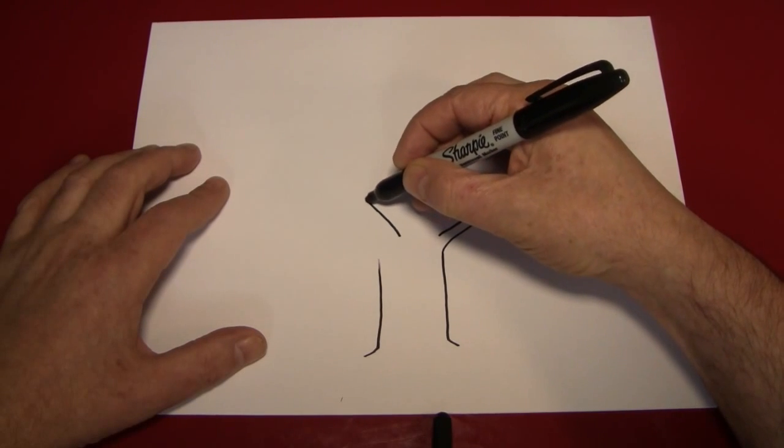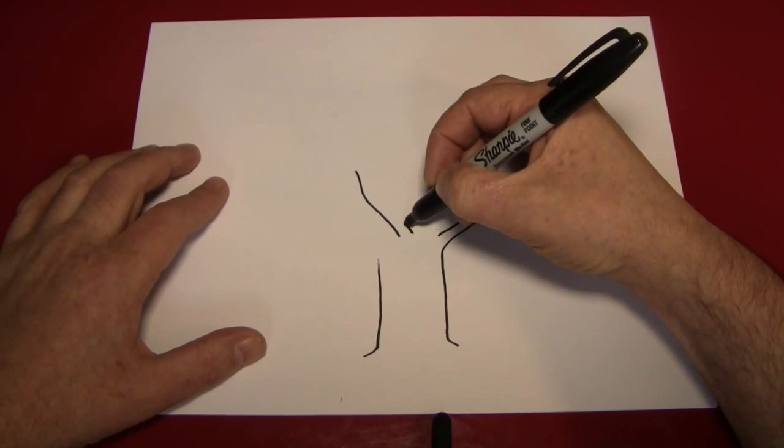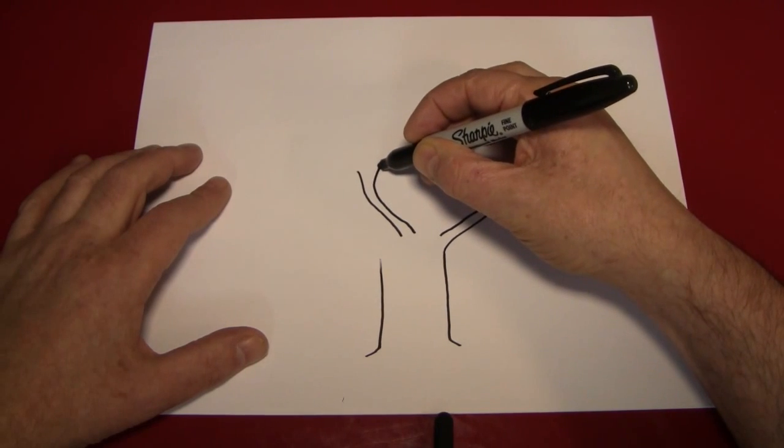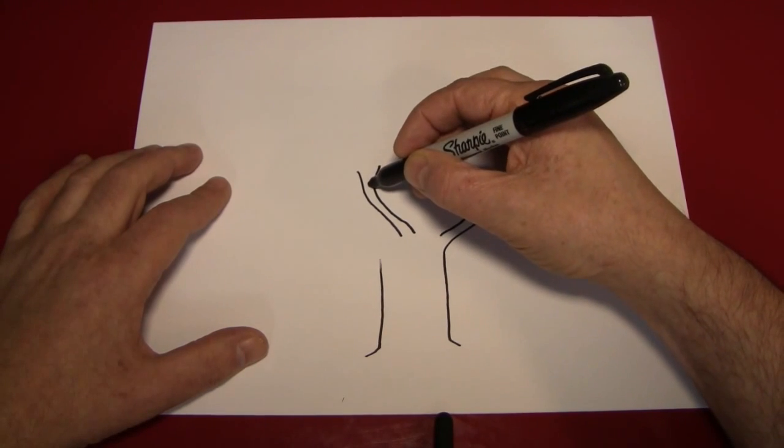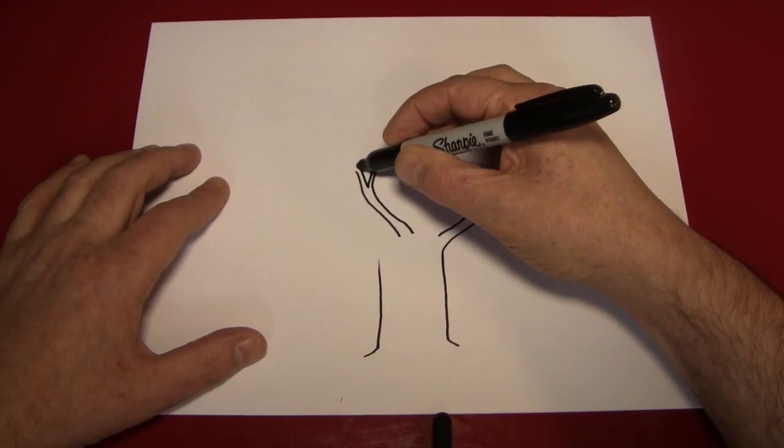A couple more, put one right here. Like I said, you start with a thicker shape, get a little bit narrower, and then they can just branch off like that.